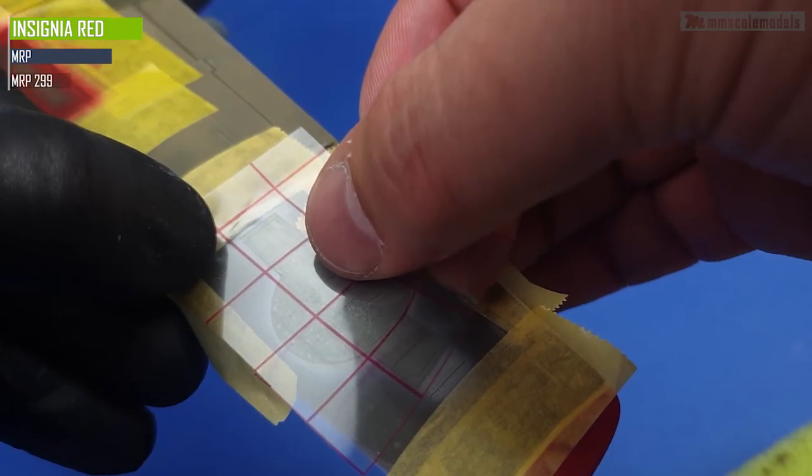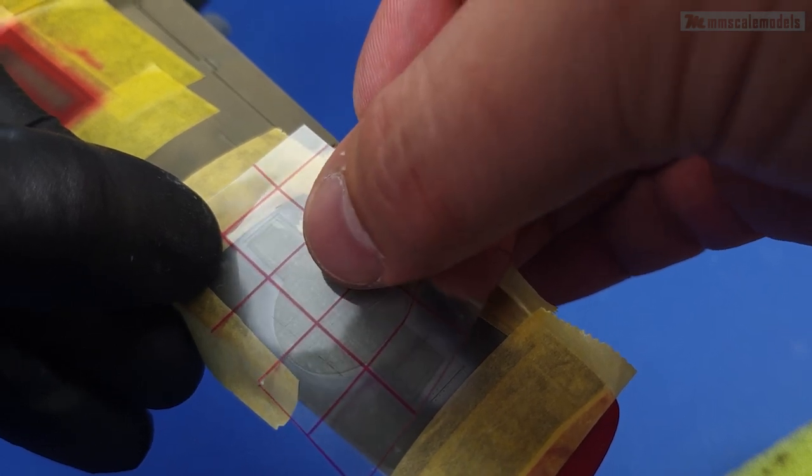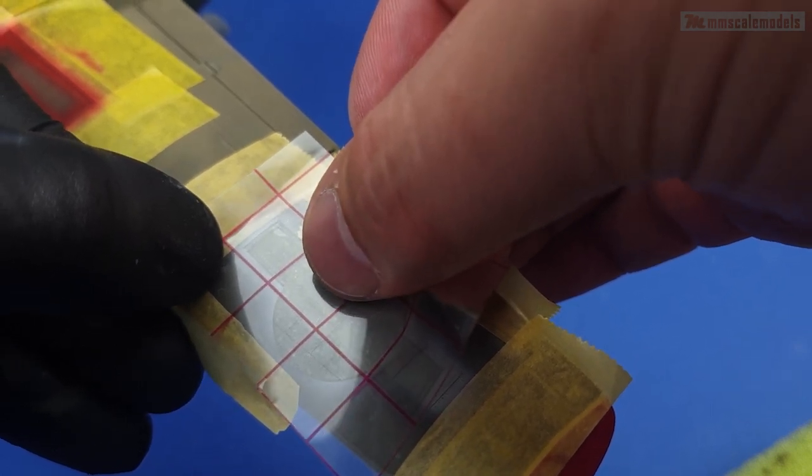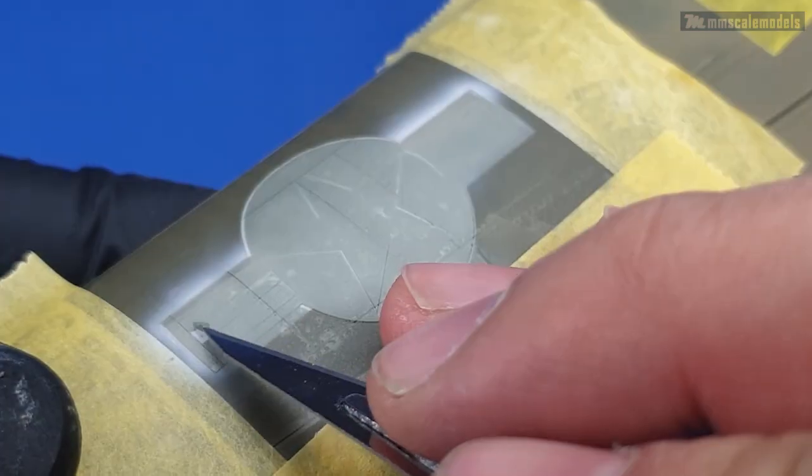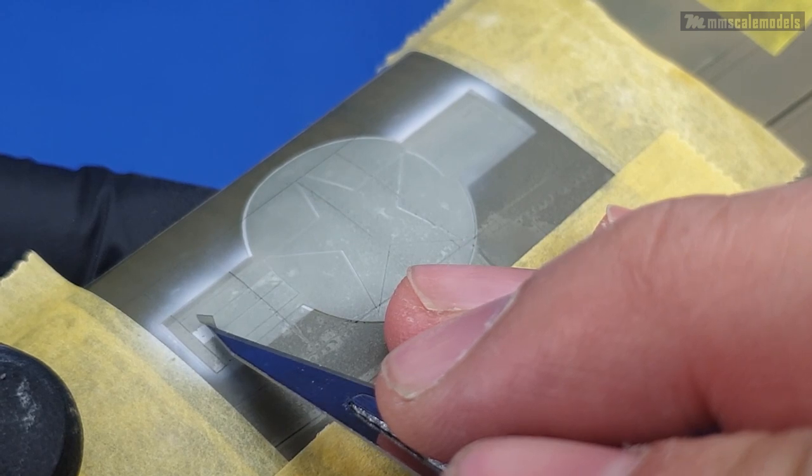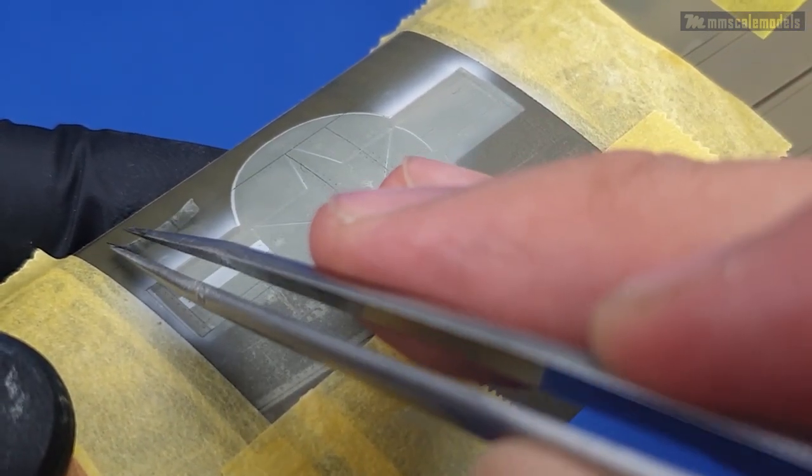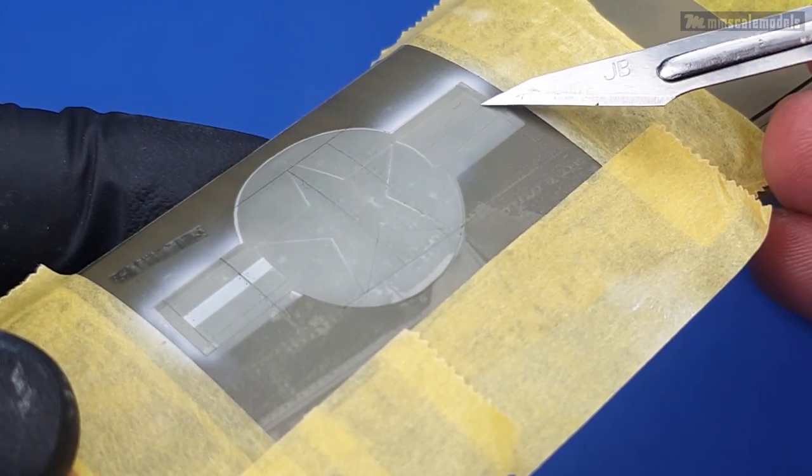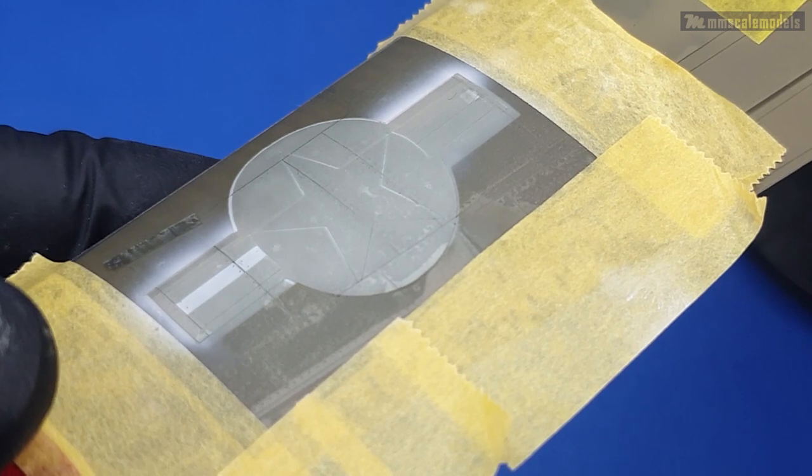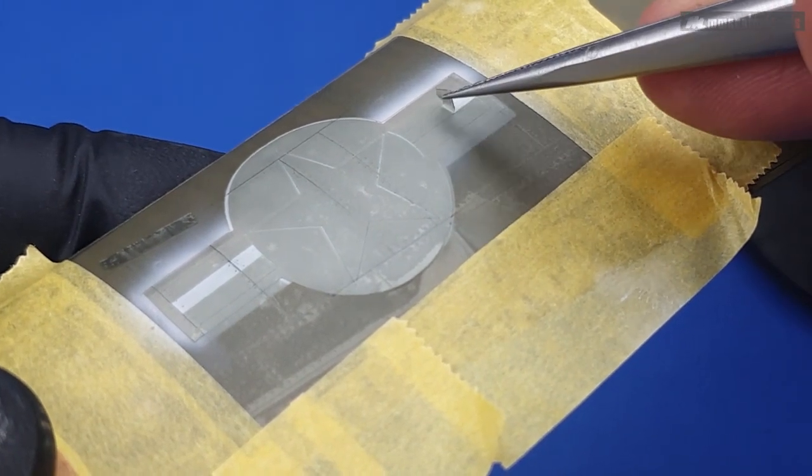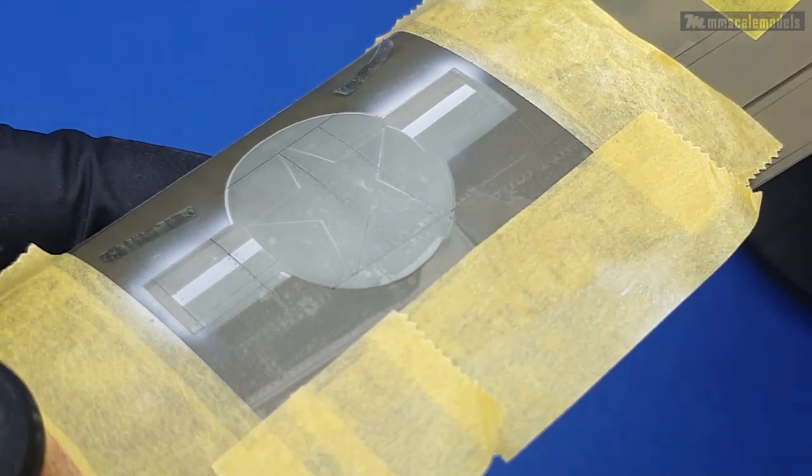Before we can start painting the insignia red stripes, I must first apply the mask, the whole piece. Now in order to paint the red stripes I will remove their portion of the masking, but I will not throw them away. Instead I'll keep them so I can install them back later in order to protect the red paint from the other colors.